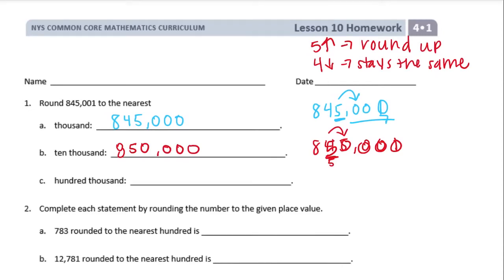The last one: round to the hundred thousands place. 845,001 — the hundred thousands place is the eight. Next to it is a four. That's four or lower, so the eight stays the same and everything else becomes zeros. This rounds to 800,000.